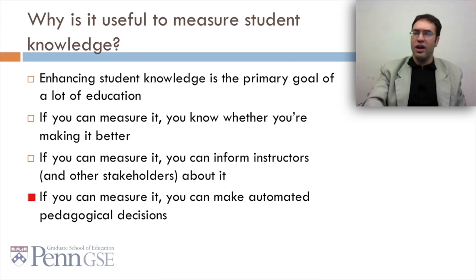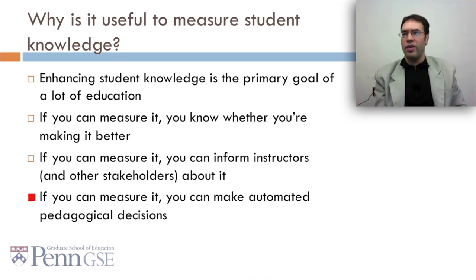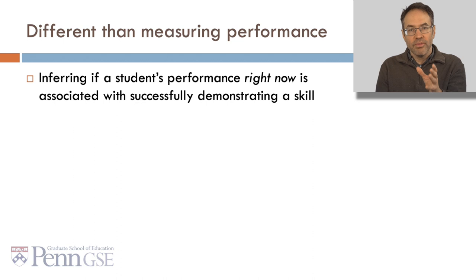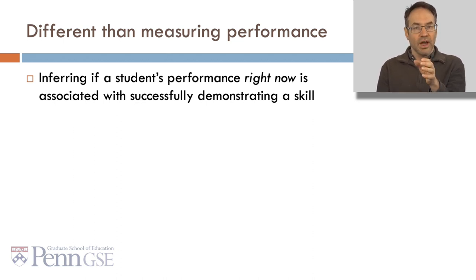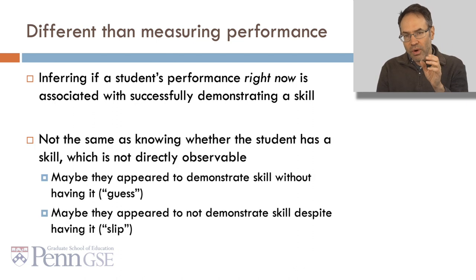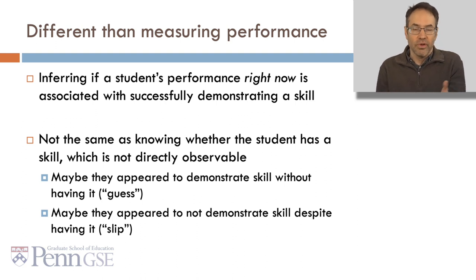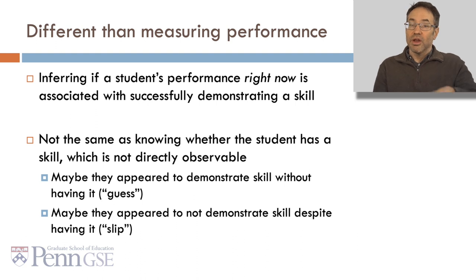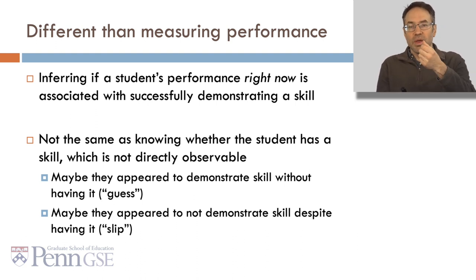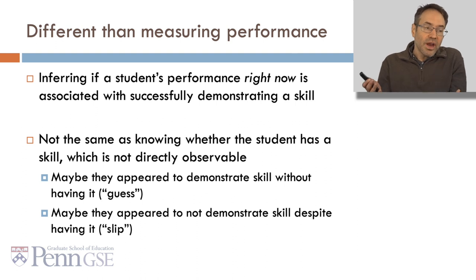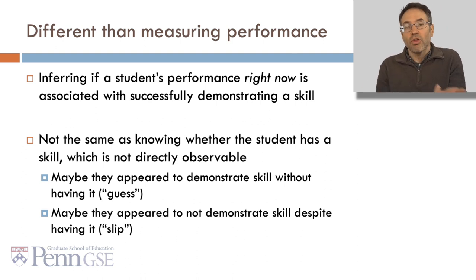The system can say, I don't think you're quite ready to move on. Now, this is different than measuring performance. What we're doing here is inferring if a student's performance right now is associated with successfully demonstrating a skill, which is not quite the same as knowing whether the student has a skill, which is not directly observable. For example, maybe they appeared to demonstrate a skill without actually knowing it, which is typically called guessing. Or, by contrast, maybe they appeared to not demonstrate the skill despite actually having it, which we often call slipping.